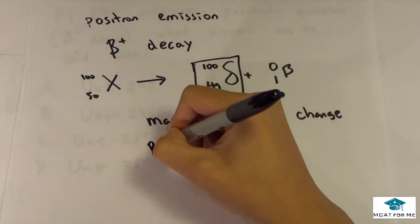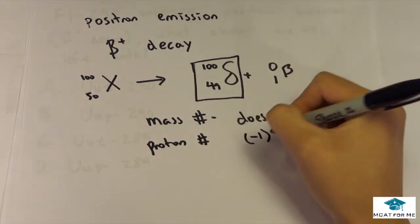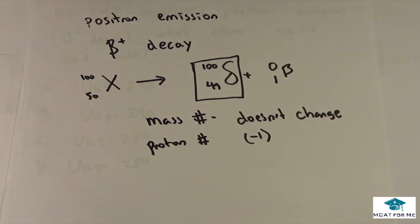The proton number though, it decreases by 1, so it goes down by 1. And remember, the actual element is specific solely on the proton number.